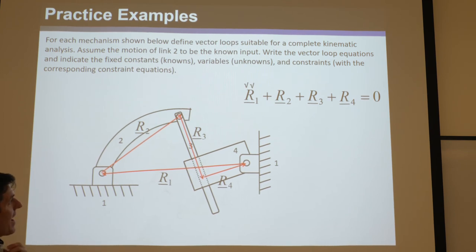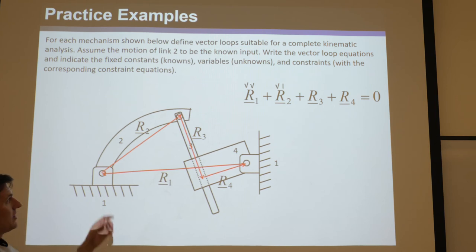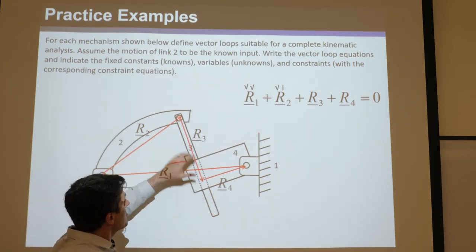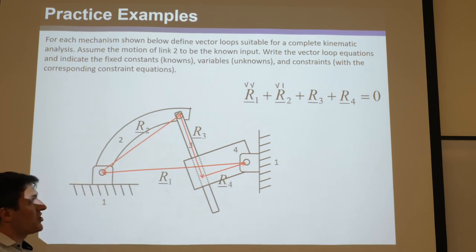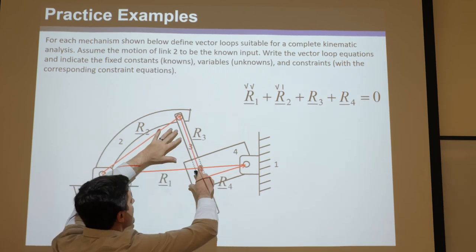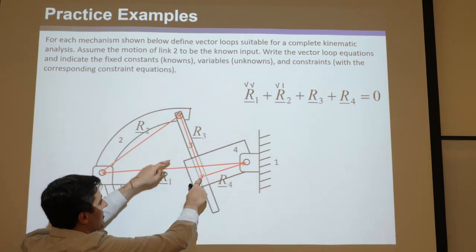You should still label this R3 because it still captures the rotation of link three. Don't label it something random like R8 — it's not just an auxiliary vector. It actually captures the rotation of three, even though one end is stuck to three and the other end is stuck to four. It will always be parallel to these two lines, and these points will move up and down maintaining a pi-over-two angle. Walking around the loop starting here: plus R1, plus R2, plus R3, plus R4, equals zero — they're all plus because of how the arrows were drawn.